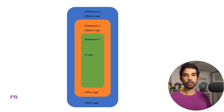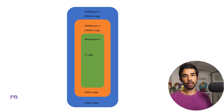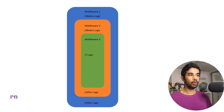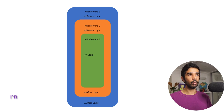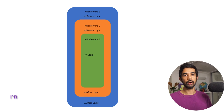If you have come across the decorator pattern or aspect-oriented programming (AOP), that's a similar pattern used here in the middleware, because it's adding functionality to existing functionality. By wrapping around middleware three, middleware two gives more functionality to middleware three, and by wrapping around middleware two, middleware one gives more functionality to middleware two.